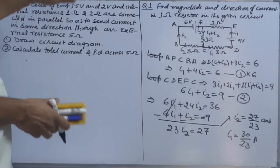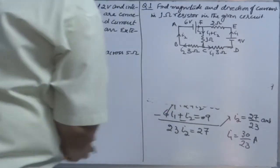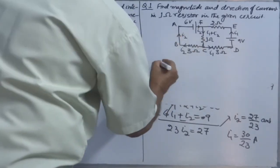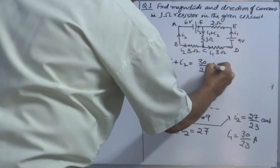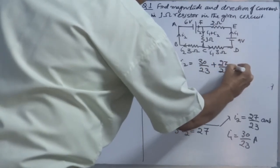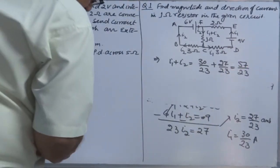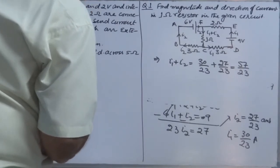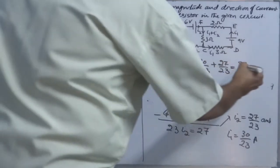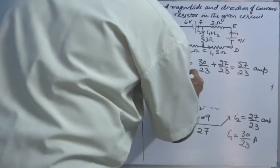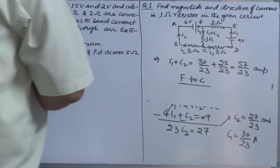What you need to calculate is the total current passing through the circuit: I1 + I2 = 30/23 + 27/23 = 57/23 ampere. The direction is also asked — it is from F to C, as per the circuit.